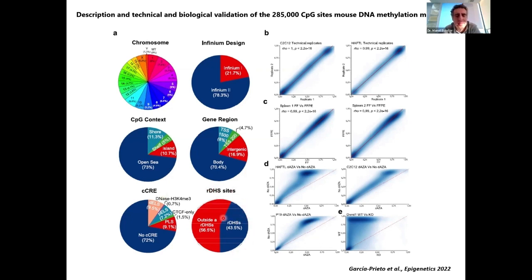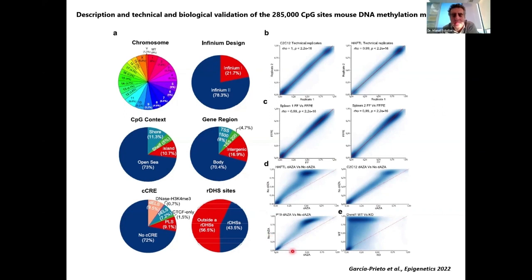These are biological validations demonstrating the power of the array. Technical replicates from the same sample show a very straight line, indicating very good reproducibility. The comparison between fresh tissues and paraffin sections from the same sample also shows a very good straight line — extremely relevant because a successful tool must work on paraffin sections. We can also detect changes in DNA methylation: three different mouse cell lines treated with the DNA methylation inhibitor 5-azacitidine show loss of DNA methylation at different sites.